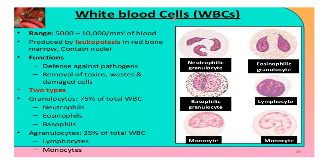White blood cells, also known as leukocytes, range from 5,000 to 10,000 per cubic mm of blood, produced by leukopoiesis in the red bone marrow. They contain nuclei. Their functions are defense against pathogens — for example, if bacteria enter our body, white blood cells get activated and fight against the bacteria — and removal of toxins, waste, and damaged cells. Granulocytes form 75% of total WBCs and agranulocytes form 25%. Granulocytes include neutrophils, eosinophils, and basophils; agranulocytes include lymphocytes and monocytes.